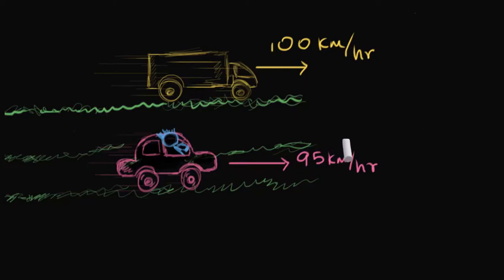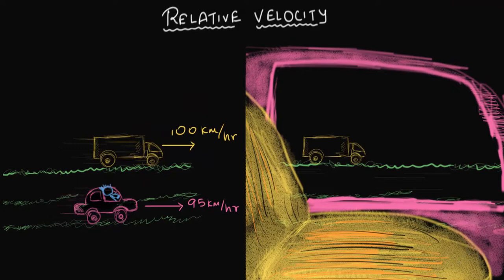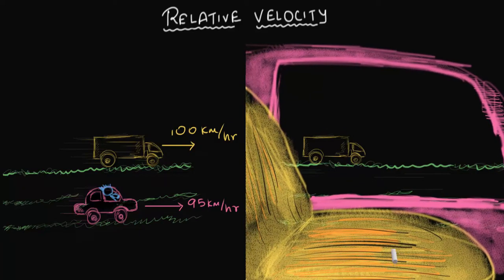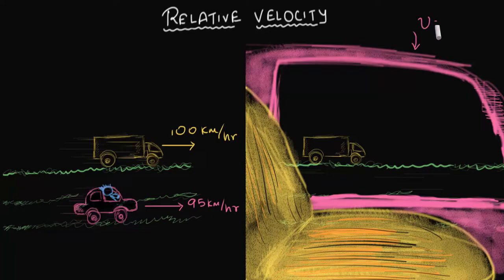This could be a familiar situation. Let's look at things from the car's point of view. Once you are inside the car, all you can see is the seat, the window, and the truck outside. Importantly, you don't see the car moving anymore — it might shake a little, but the seats, the window, and any passengers just stay there. So the velocity of the car as seen from your point of view is zero. You are at rest.